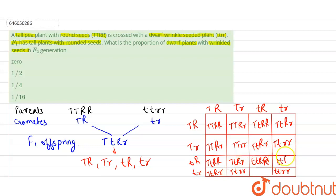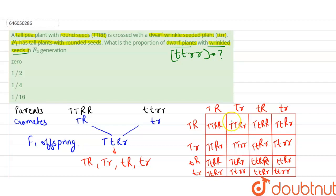These are the F2 generation offspring. We have to find the proportion of dwarf plants (tt) with wrinkled seeds (rr). Out of 16 total offspring, only one offspring has the genotype tt rr — the dwarf wrinkled-seeded phenotype.